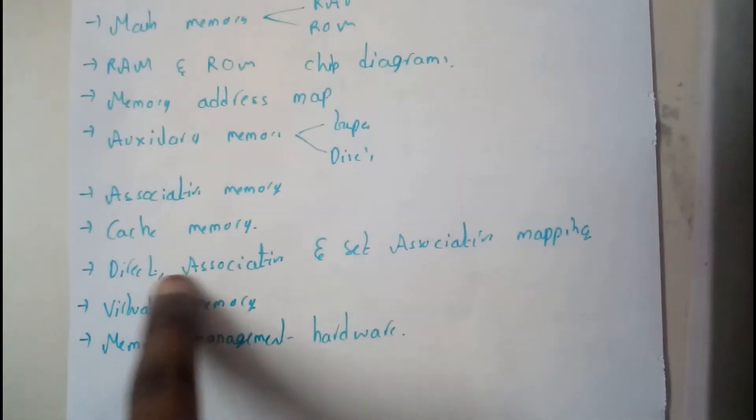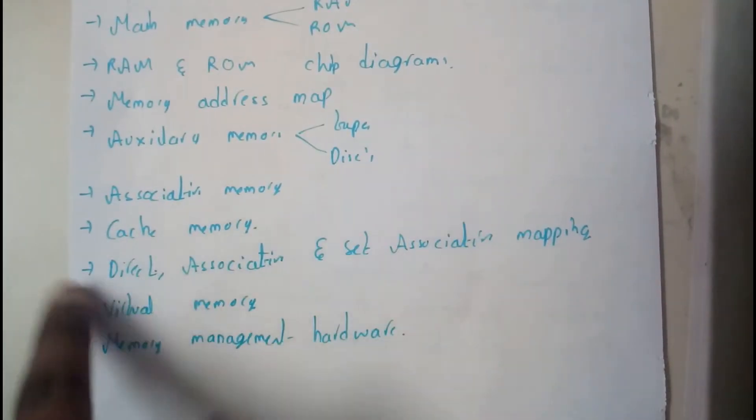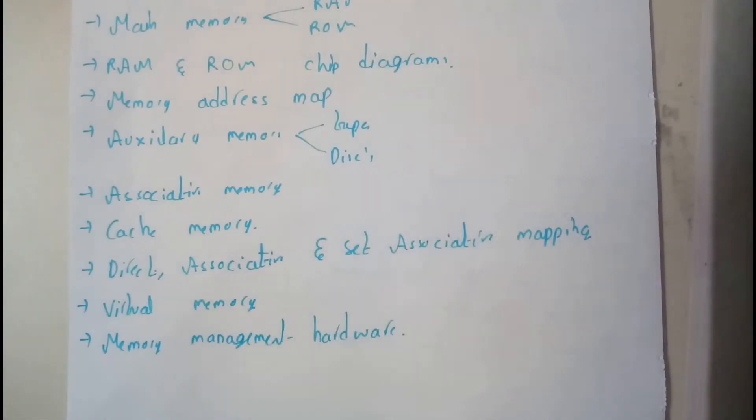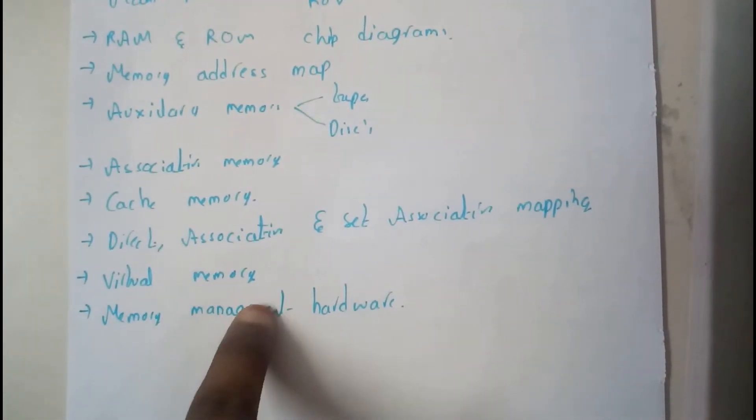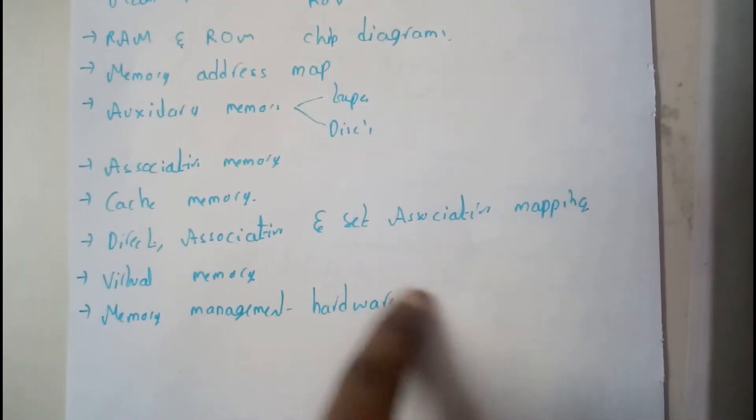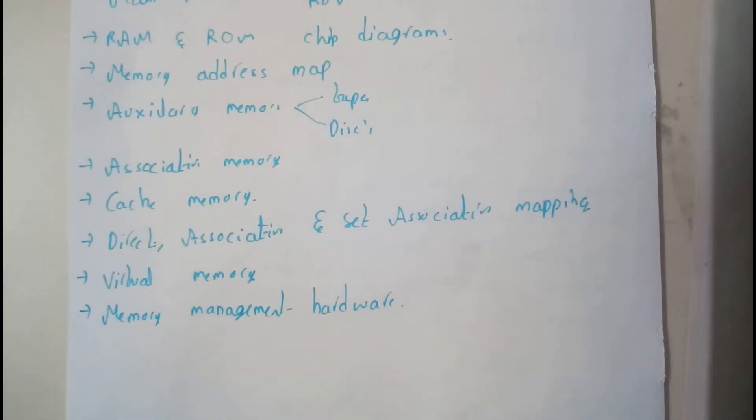We learned about different mapping techniques—the three mapping techniques: direct, associative, and set-associative. We also learned about virtual memory and discussed in depth memory management hardware. By this, we are completing the fourth chapter.